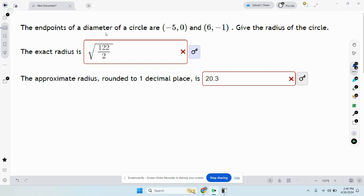Okay, so the endpoints of the diameter of a circle are (-5, 0) and (6, -1). Give the radius of the circle, the exact radius.